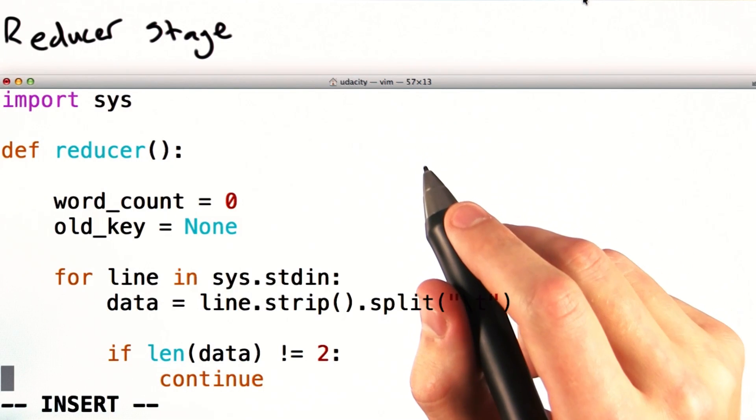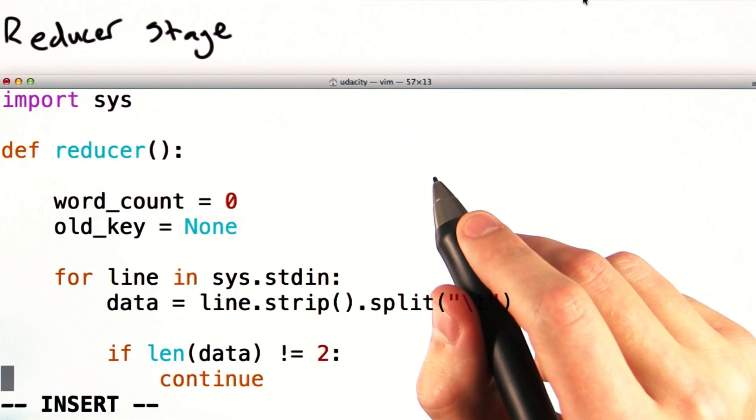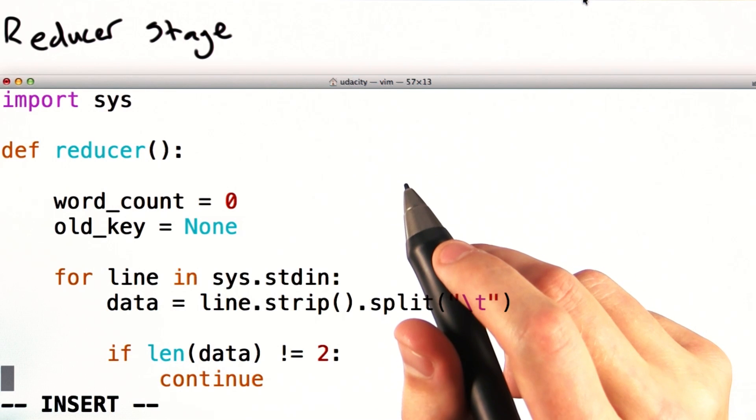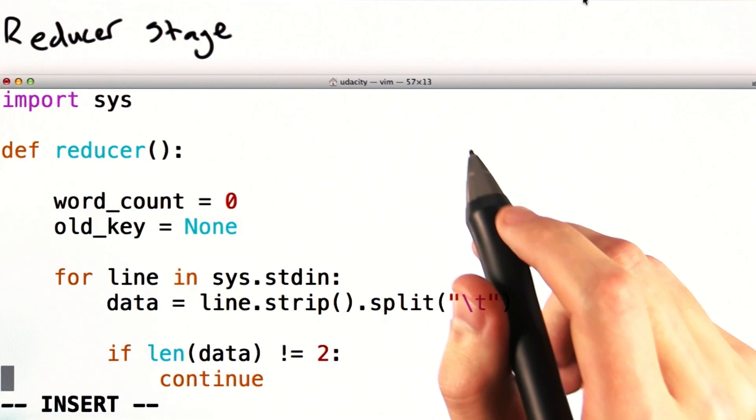Below is a Python implementation of a reducer for our word count problem. Let's walk through this reducer line by line and discuss what it's doing.